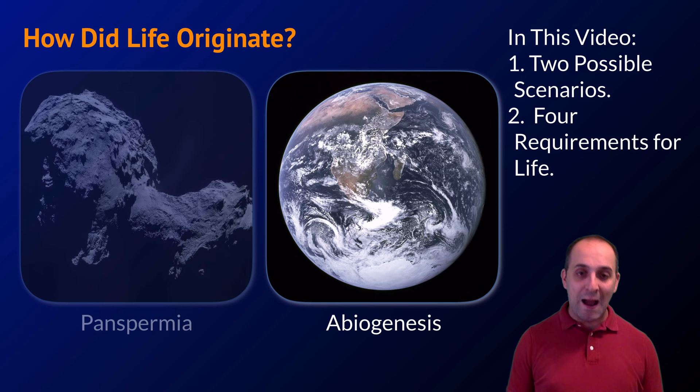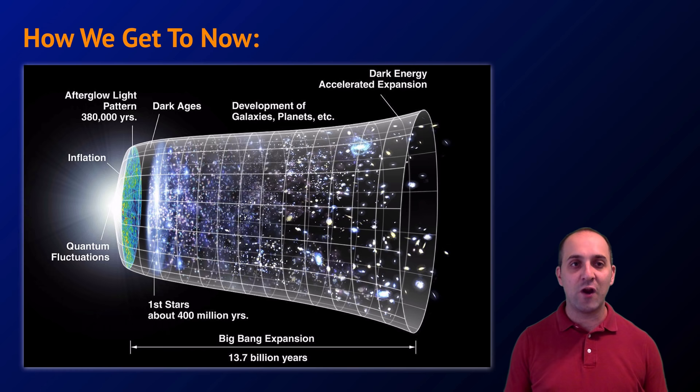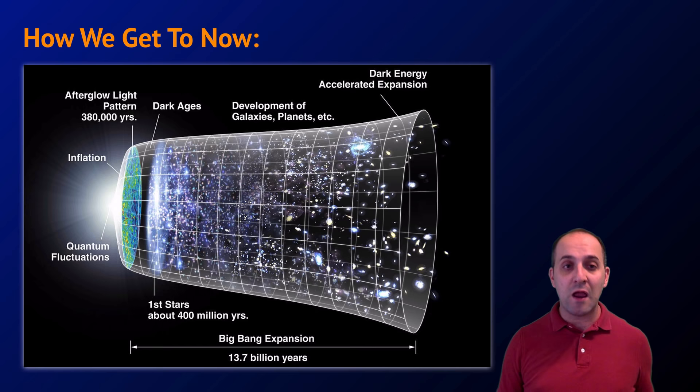Panspermia is a scientific hypothesis, but if life originated elsewhere and then came here, that's fantastic — though it would make for a very short video. So we're really going to investigate the abiogenesis hypothesis and look at how this could have possibly happened.